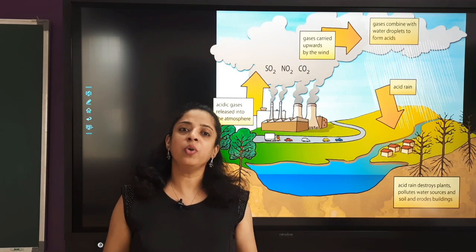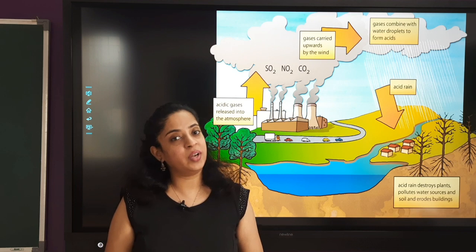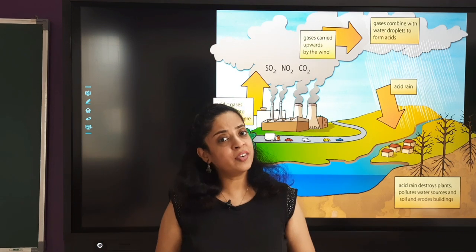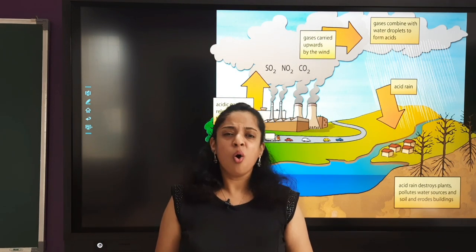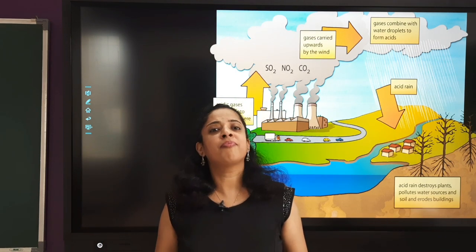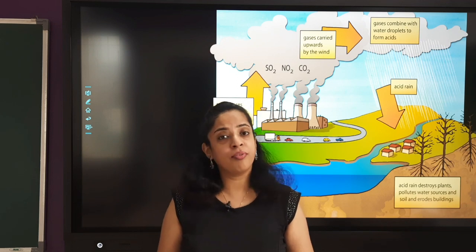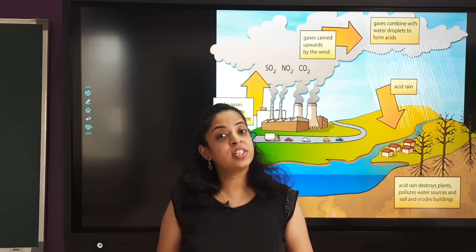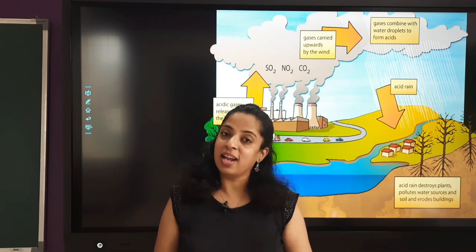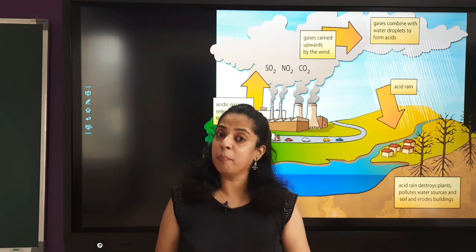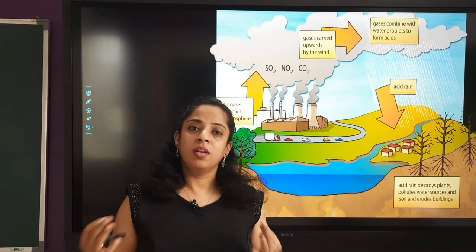What do you mean by the term acid rain? Acid rain refers to rain or any type of precipitation — like snow or fog — which is acidic in nature, that is, having a pH less than 5.6.